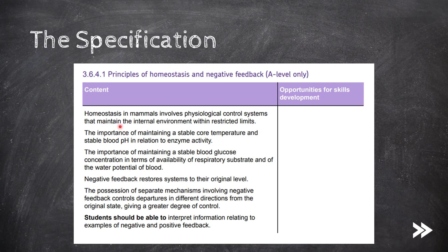First of all, we need to know that homeostasis in mammals involves physiological control systems that maintain the internal environment within restricted limits. We need to know the importance of maintaining a stable core temperature and stable blood pH in relation to enzyme activity, as well as the importance of maintaining a stable blood glucose concentration in terms of availability of respiratory substrates and of the water potential of the blood.